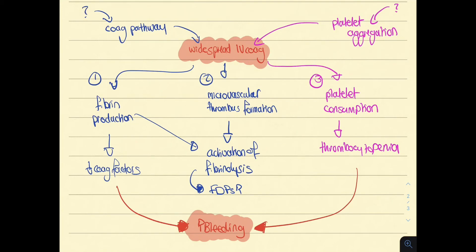Let us recap. Something causes activation of the coagulation pathway and platelet aggregation, leading to widespread intravascular coagulation. This leads to: first, fibrin production, which consumes coagulation factors causing them to decline, and this can cause bleeding; second, micro and macrovascular thrombus, which activates fibrinolysis, forming fibrinogen degradation products — fibrin also activates fibrinolysis; and third, platelet consumption, leading to thrombocytopenia, which can also cause bleeding.